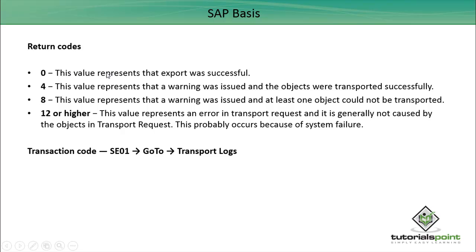The return code 0 means the export was successful. Return code 4 means a warning was issued but the objects were transported successfully. Return code 8 means a warning was issued and at least one object could not be transported. Return code 12 or higher represents an error in the transport request — it is generally not caused by the objects in the request, but rather by a system failure.